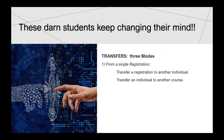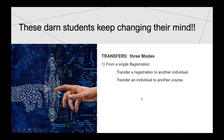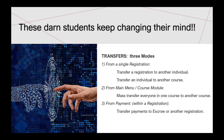Now, students keep changing their minds — transfers and cancellations. There are three main modes of transfers for a single individual registration: you can transfer the registration to another person, transfer the person to another course, or from the main menu Course module, mass transfer everyone from one course to another. Within payments, there are also options to transfer payments to escrow or to another registration.